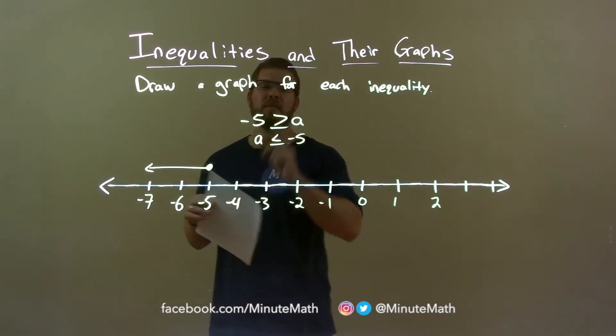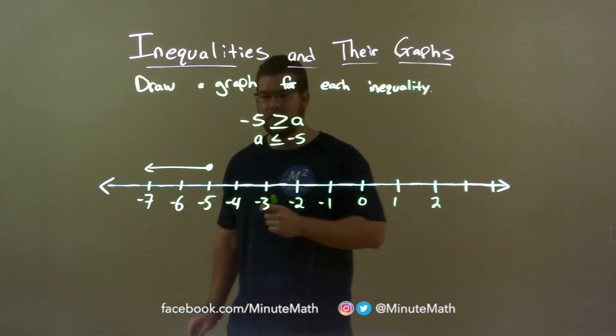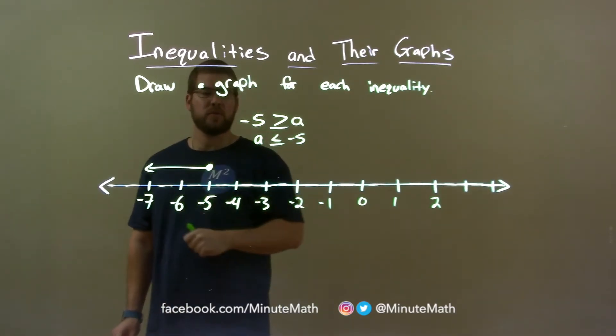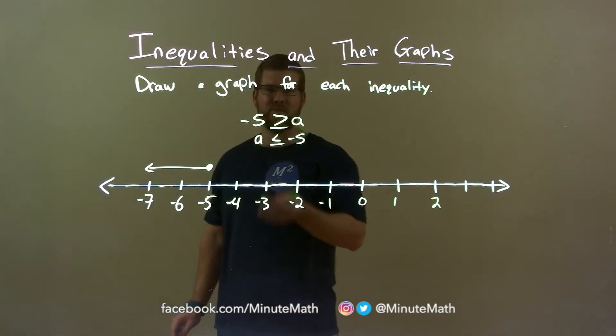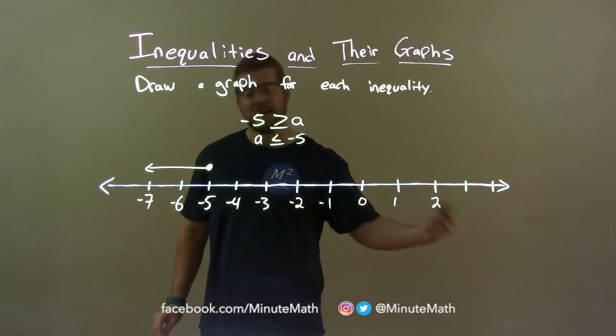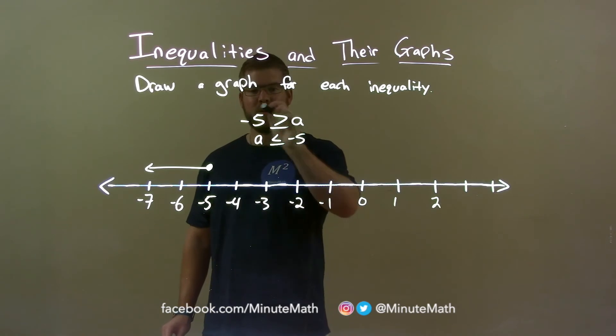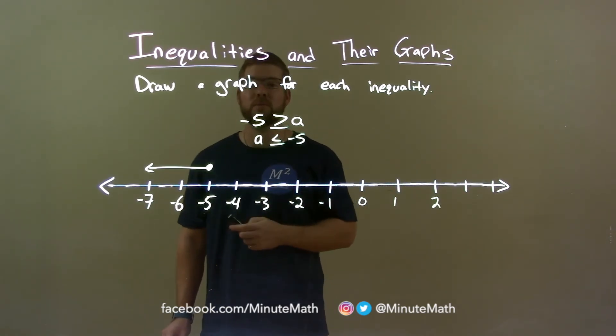So quick recap. We're given negative 5 is greater than or equal to a and we need to graph that. I know negative 5 was equal to a, so I put a closed circle there and when we flipped it, it's easier to see a is less than or equal to negative 5. Shade to the left goes less than, and there we have our final answer.